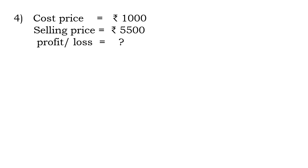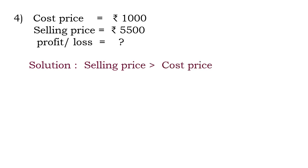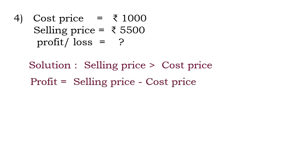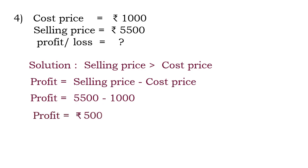Let's see one more example. Here, selling price is greater than cost price because selling price is rupees 5500 and cost price is rupees 1000. So you are going to apply the profit formula: Selling Price − Cost Price. Substitute the values and you will get the answer. My dear students, you have to remember the profit and loss formulas.